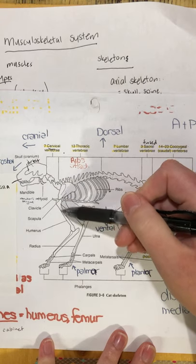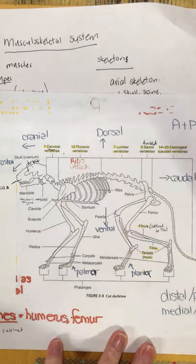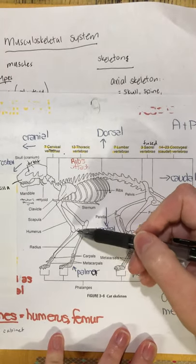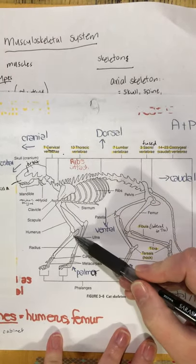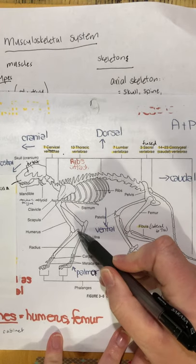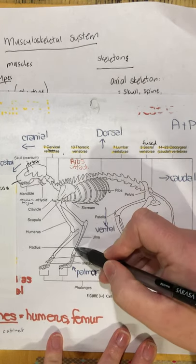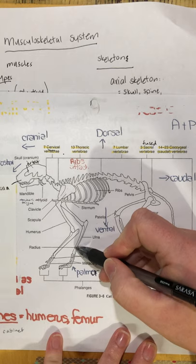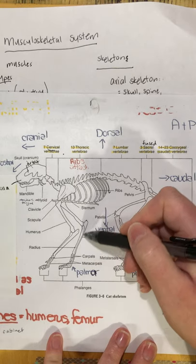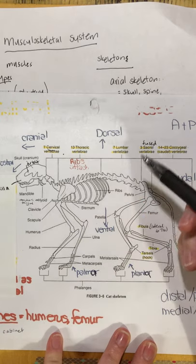Moving more distal, our next bone is the humerus — the equivalent of our upper arm. Then we have the radius and the ulna. The ulna is the one that sticks out, and then we have the radius. The radius is a little bit smaller — so there are two bones in the forearm.